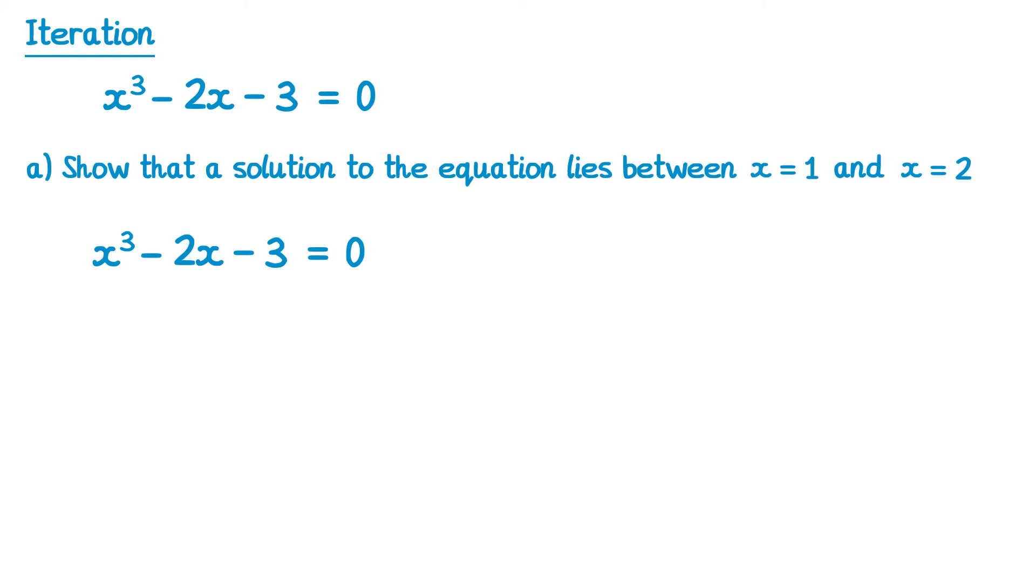So if we substitute in 1, we'd get 1 cubed minus 2 times 1 minus 3, which comes out as negative 4. If we substitute in 2, we get 2 cubed minus 2 times 2 minus 3, which gives us 1.